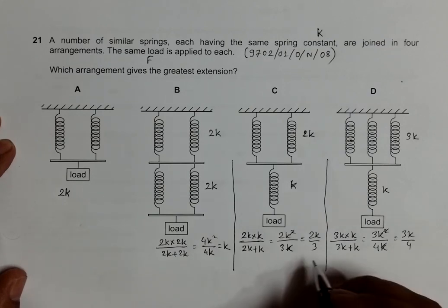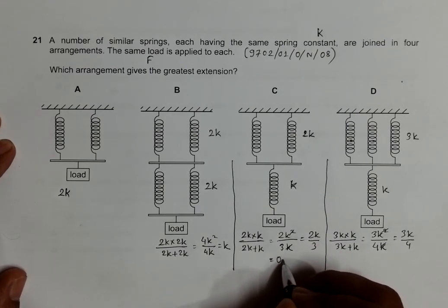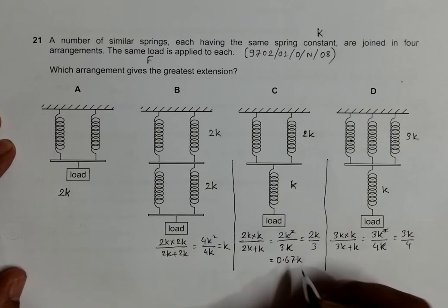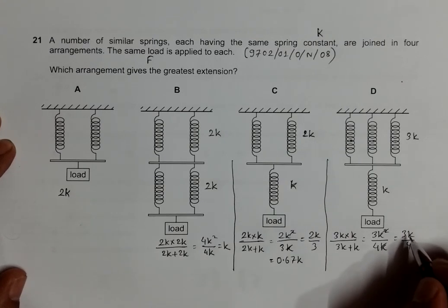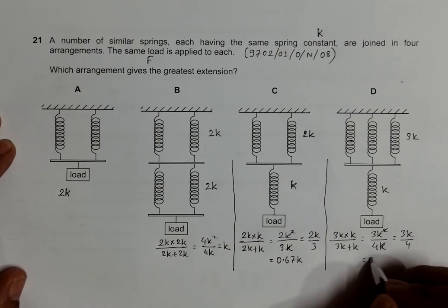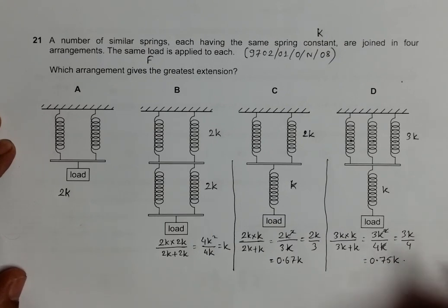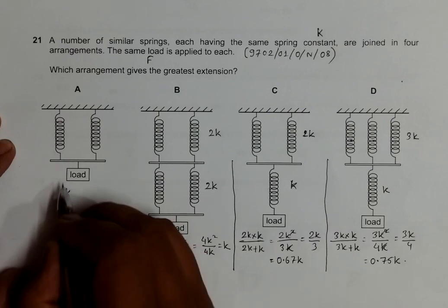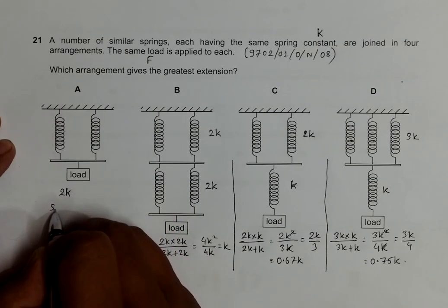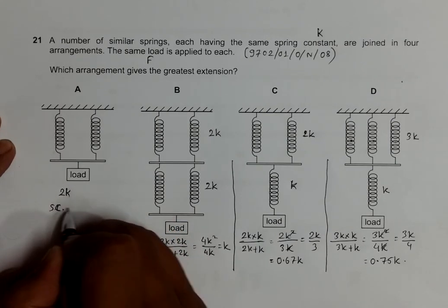If I take these ratios in decimal, this will be equal to 0.67K, and here it is equal to 0.75K. So here we have the spring constant is highest.